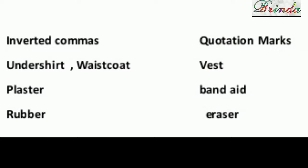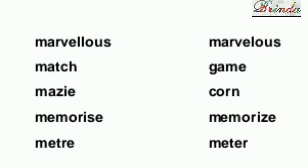Dual carriageway is British English; divided highway is American English — dual means double. Credit account is the same in both. Chemist shop or drugstore or pharmacy. Indicator means side signal in British English; turn signal is American English. Inverted commas is British English; quotation marks is American English. Undershirt or waistcoat versus west/vest. Plaster is British English; band-aid is American English. Rubber is British English; eraser is American English. Marvelous — the spelling differs: M-A-R-V-E-L-L-O-U-S (British) and M-A-R-V-E-L-O-U-S (American), same sound.